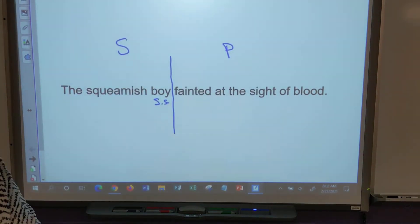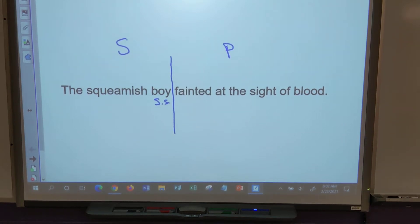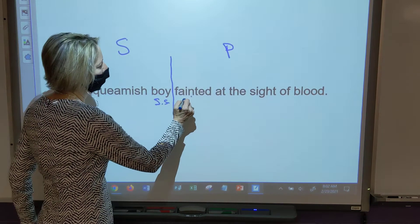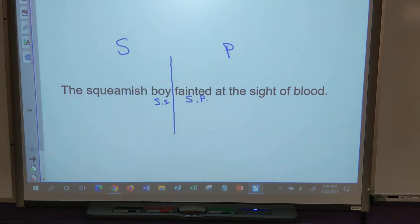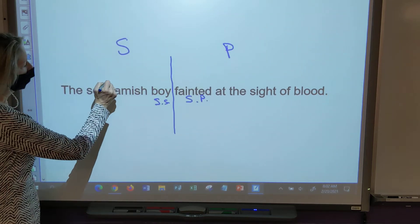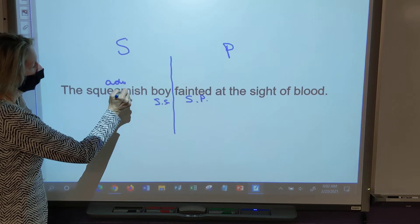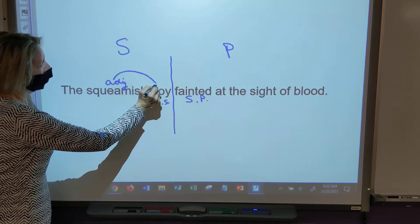Ethan? Fainted is the simple predicate. Very good. Emery? Squeamish is an adjective and it's describing the boy. Excellent. Squeamish is an adjective describing the boy.